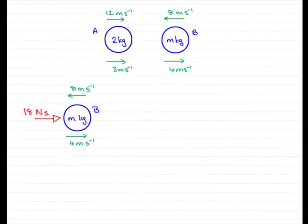Now, in this part, there's two ways that we could calculate the mass m of particle B.